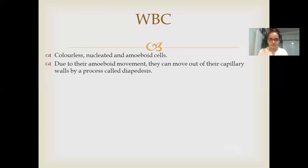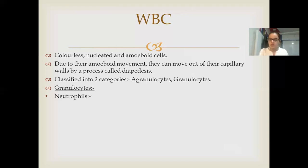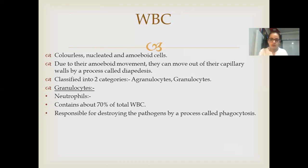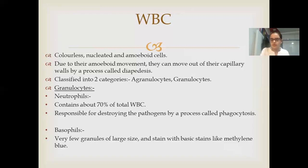WBCs are classified into two categories: agranulocytes and granulocytes. Granulocytes include neutrophils, which contain 70% of total WBCs and are responsible for destroying pathogens by a process called phagocytosis. Another type is basophils, which have very few granules of large size and stain with basic stains like methylene blue, making up about 0.5 to 1% of total WBCs.